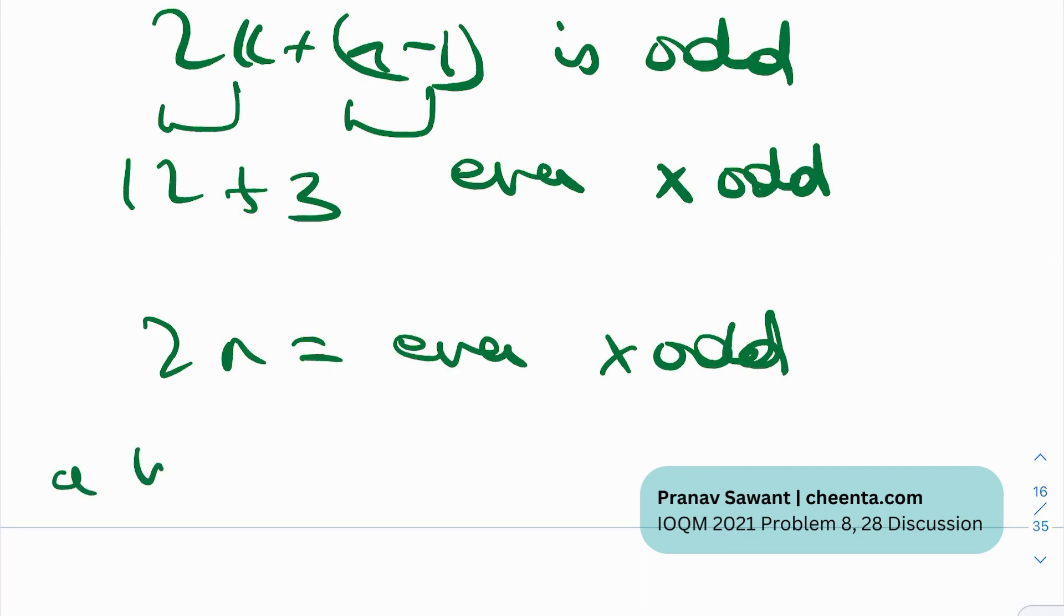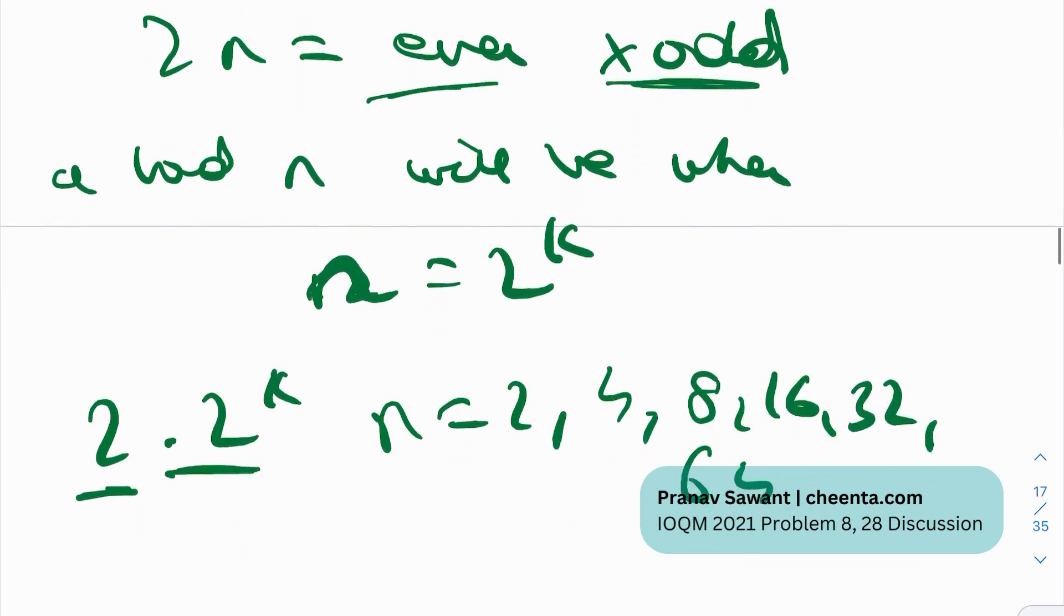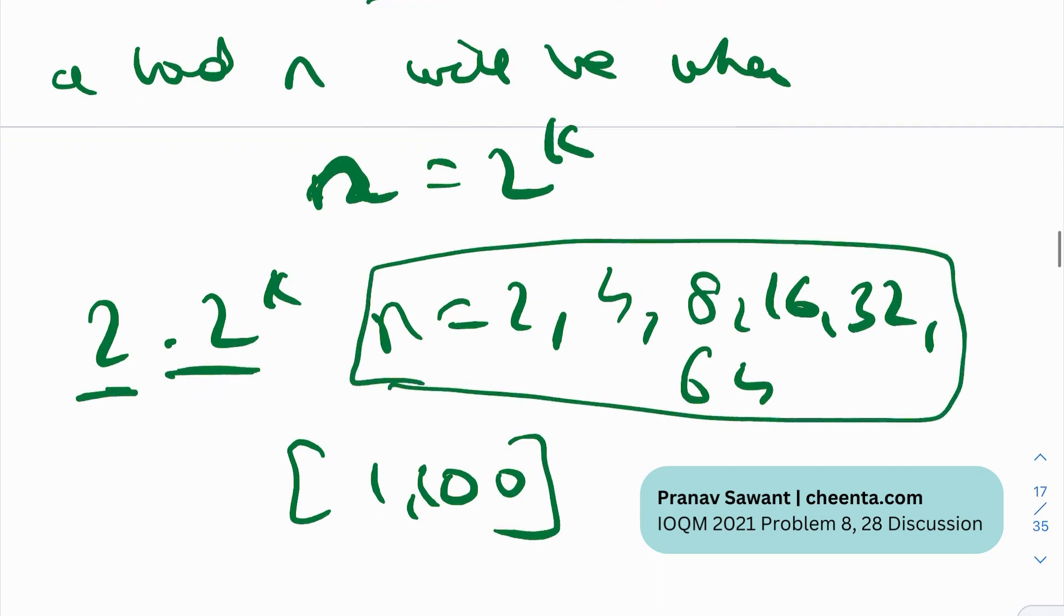So what will be a bad N? A bad N will be when N is of the form 2 raised power K. Why? Because then this would be 2 times 2 raised power K. And this would be an even number. This would be an even number. A product of two even numbers. But on the right hand side, you would have an even number and odd number. So N can never be 2 raised power K. Any other value of N is good. So for example, if N is 2, 4, 8, 16, 32, 64, N will be bad. And obviously the set is 1 to 100. We need to remember that. Set is 1 to 100. So if N is any of these quantities, N is bad.